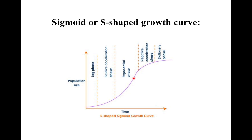In the logarithmic or exponential phase, there is a rapid rise in population size because of the availability of much food and requirements of life in plenty, and there is also absence of competition. The growth curve here rises sharply upward.